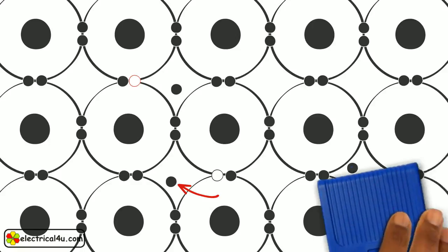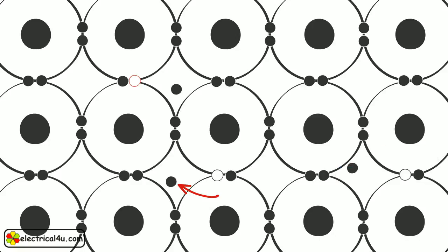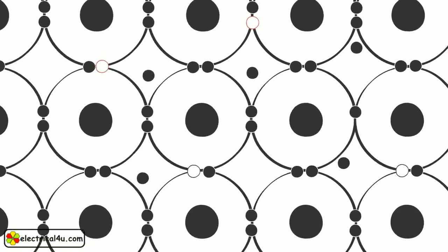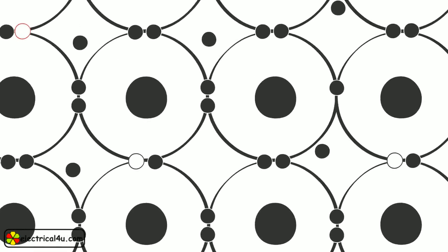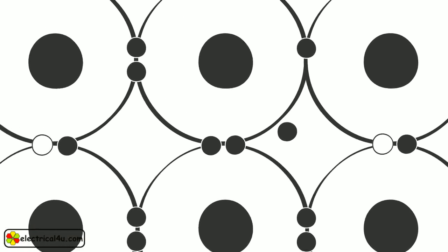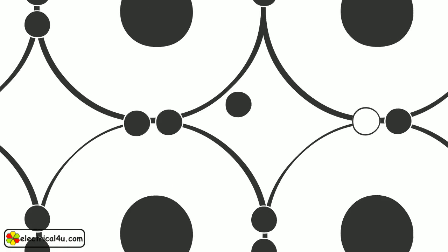When electrons become free they get attracted and fall into a hole created by another electron. This merging of free electrons and holes is called recombination. The time of creation of a free electron and its falling into a hole is very quick, and the time taken is of the order of nanoseconds.